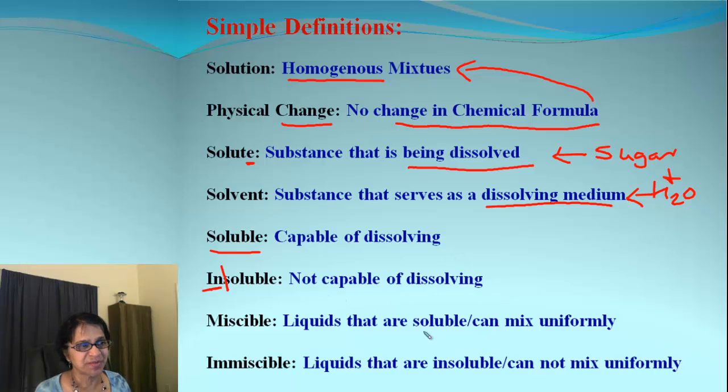Then there are some words: soluble and insoluble, which means capable of dissolving and not capable of dissolving. Then there is miscible and immiscible. If you have two liquids which are mixed up and if they are forming uniform liquid, you cannot find out that there are two liquids mixed up, then that is called miscible. Whereas immiscible is when you mix two liquids and they can actually separate into layers.